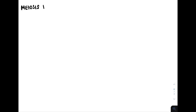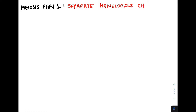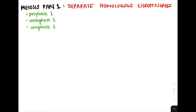Let's talk about meiosis. Meiosis consists of two parts. In the first part, we're going to separate homologous chromosomes, whereas in the second part, we are going to separate sister chromatids. Meiosis has four phases in both of its cell divisions: the first is prophase, then metaphase, anaphase, and then telophase and cytokinesis.